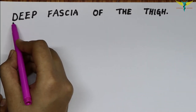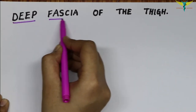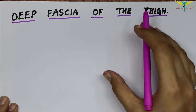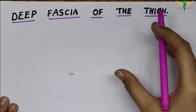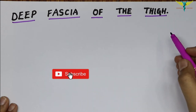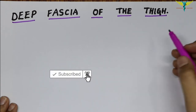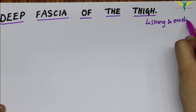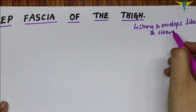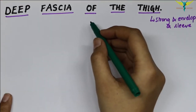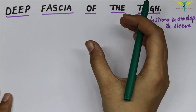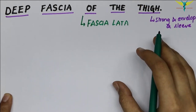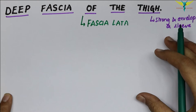In this video, let's learn about the deep fascia and the modifications of the deep fascia of the thigh. The deep fascia of the thigh is very strong and it envelops the thigh like a sleeve. This deep fascia is called the fascia lata, because it encloses the wide area of the thigh.